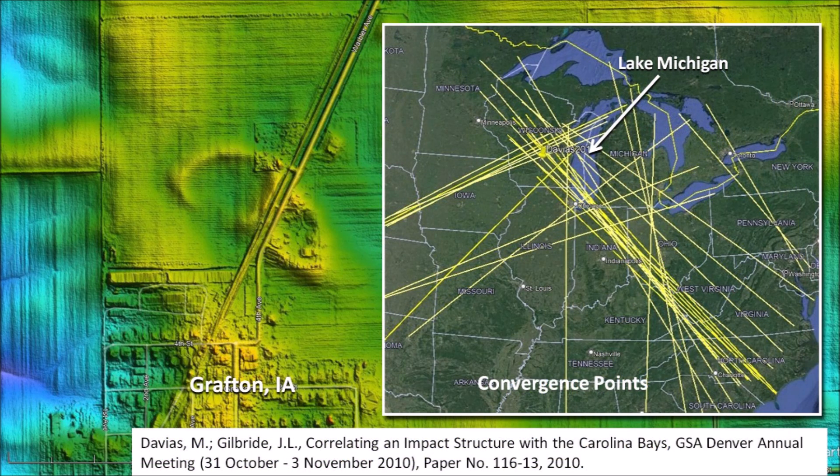It is true that I have relied on Saginaw Bay as the epicenter of an extraterrestrial impact based on a paper published by Davies and Gilbride in 2010. However, a chart of the orientations of the Carolina Bays, Nebraska Rainwater Basins and other elliptical structures in several states shows multiple convergence points, not only one. The main intersection point is in Wisconsin, which adjusted for the rotation of the Earth corresponds to Lake Michigan.